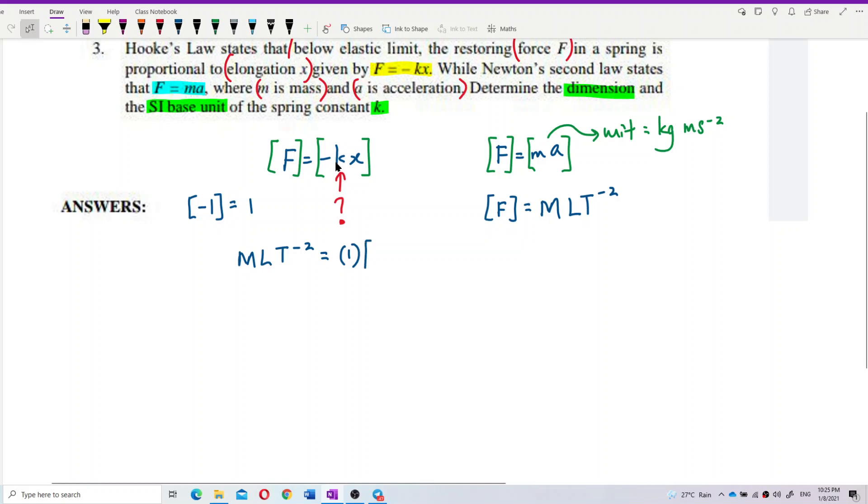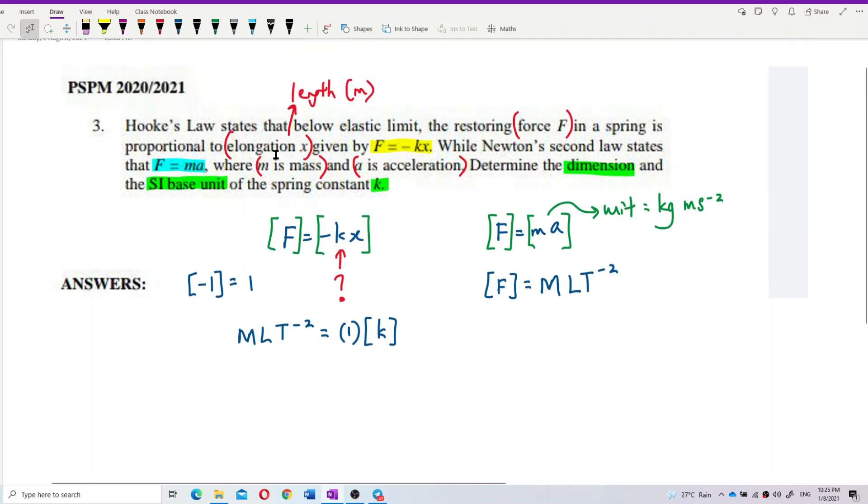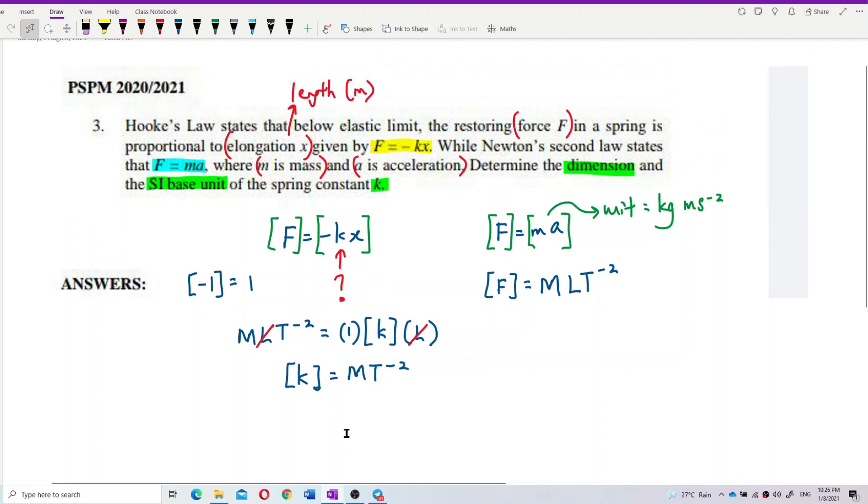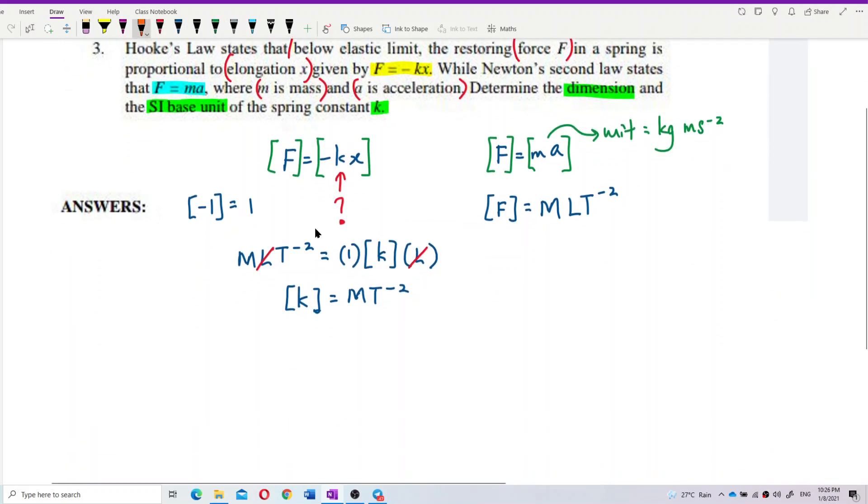And dimension of k, that's what we want to find. And dimension of x, x is a length. Elongation is a length. Length is in meter, unit meter. So meter dimension will be L. X dimension is L. So now we can easily find the dimension of k. You can cut this L. Length and length off. And turn out the dimension of k will be M T negative 2. That's the dimension of k, the spring constant. We already got the dimension.